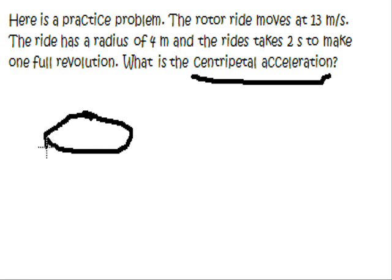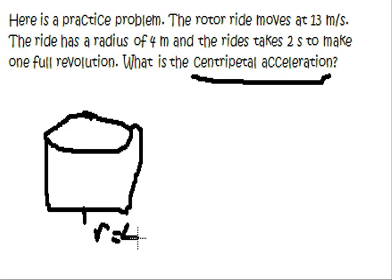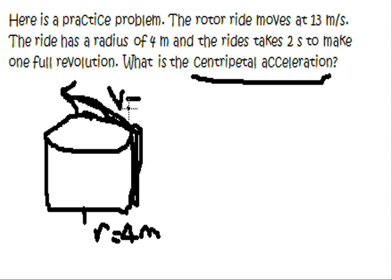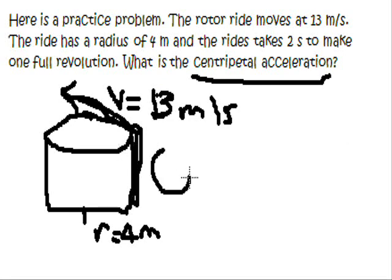I would like to start by drawing a simple sketch of what's going on in the problem. We have a radius of 4 meters. And we have a linear speed. Remember this should be a tangent line. The linear speed always moves tangent to your circle. So we have 13 meters per second for the linear speed. And we have a time of 2 seconds.